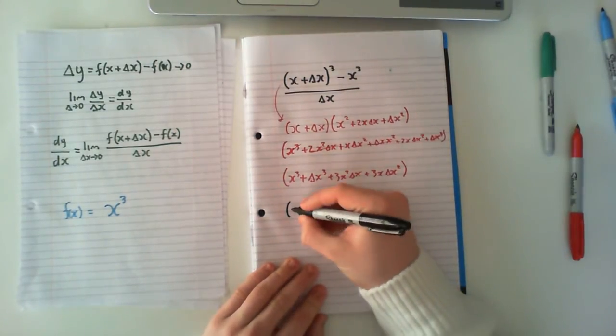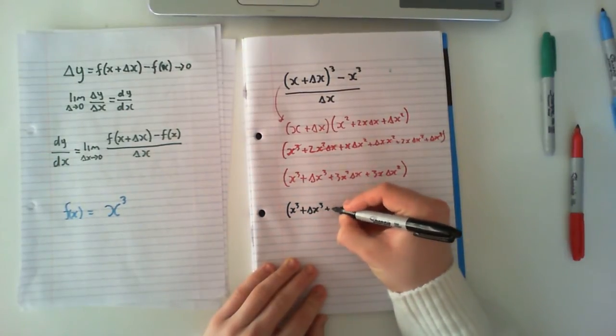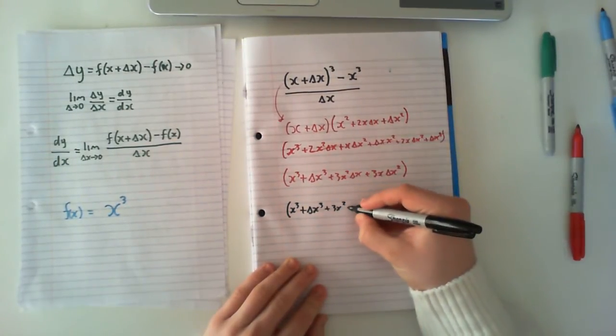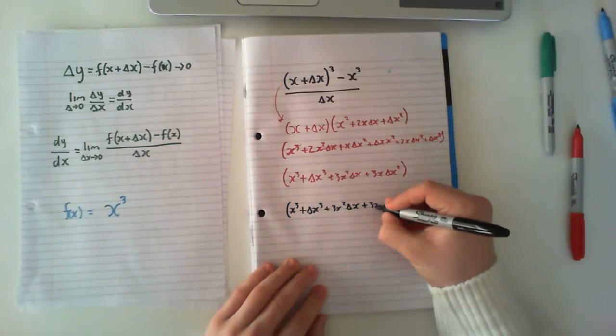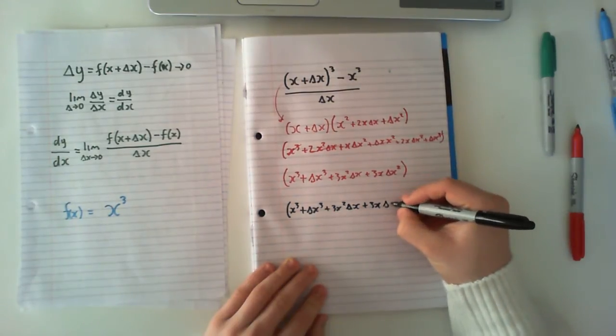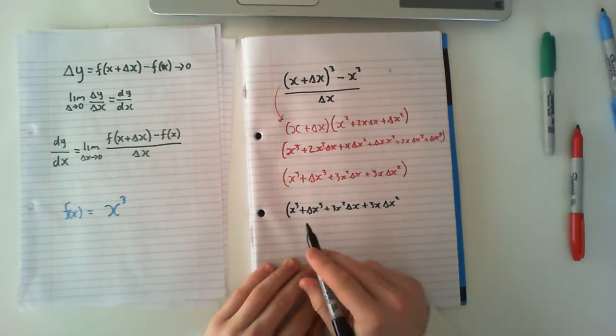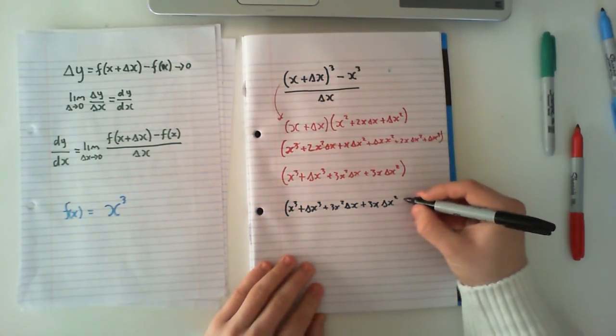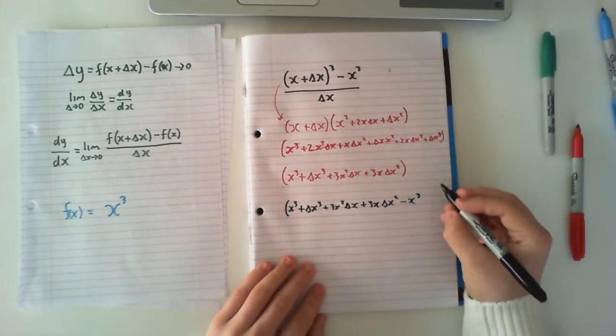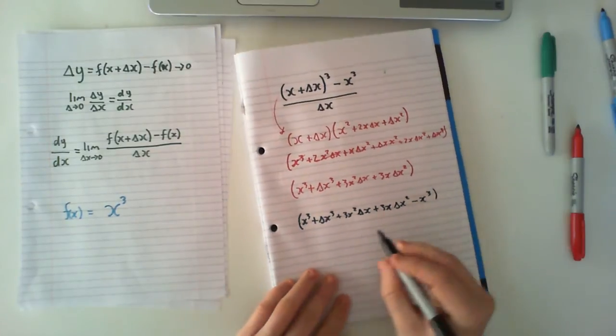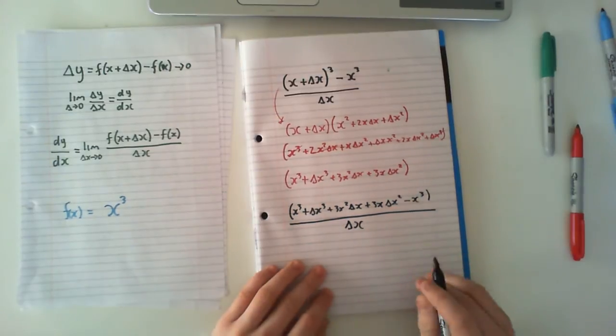So we can rewrite our term up here. So now we have x cubed plus delta x cubed plus 3x squared delta x plus 3x delta x squared, and then our minus x cubed. And then all of this is over our delta x here.